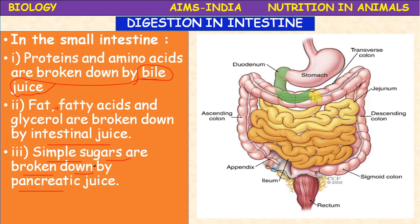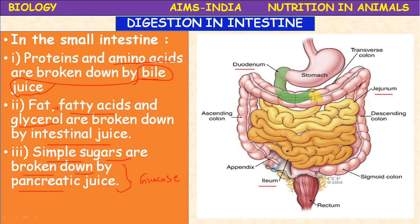In the small intestine, the total process of digestion completes and end products are produced. All carbohydrates are finally converted into glucose, which is the simplest, absorbable form of sugar. All fats are converted into fatty acids and glycerol. Proteins are first converted into peptides, then polypeptides, and finally into amino acids. These processes take place in the ileum of the small intestine. Maximum digestion takes place in the duodenum, then jejunum, and finally the end products are produced.